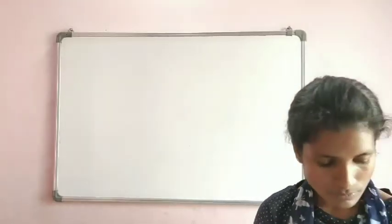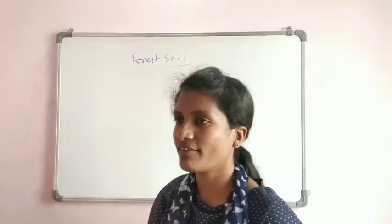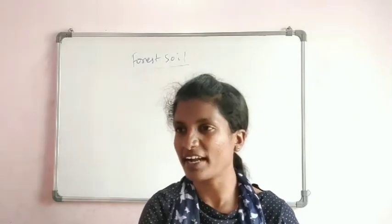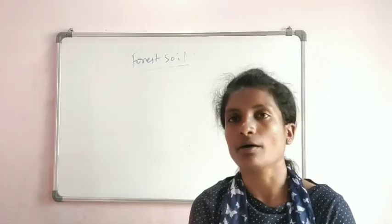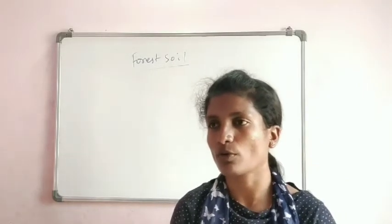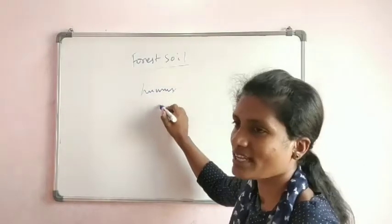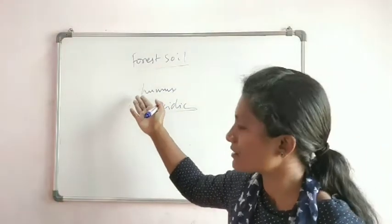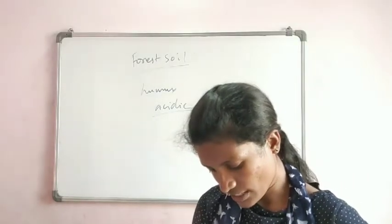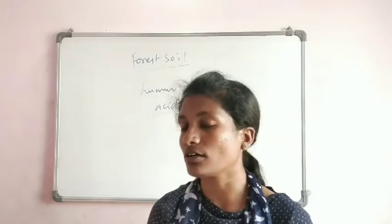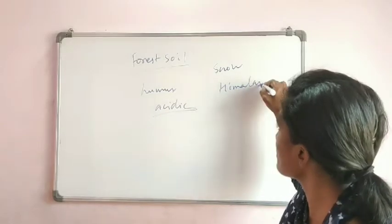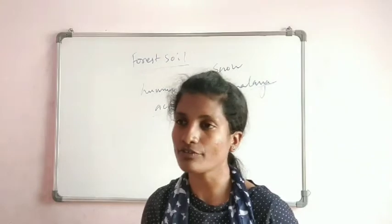Forest soil is found wherever there are western ghats, eastern ghats, or tropical evergreen forests, and mainly near the Himalayas. The humus content is very low because the soil is more acidic in nature — which causes reduced moisture and fertility. Forest soil is found in hilly and mountain areas with sufficient rainfall. In Himalayan regions, the soil is often covered with snow, further reducing humus content.